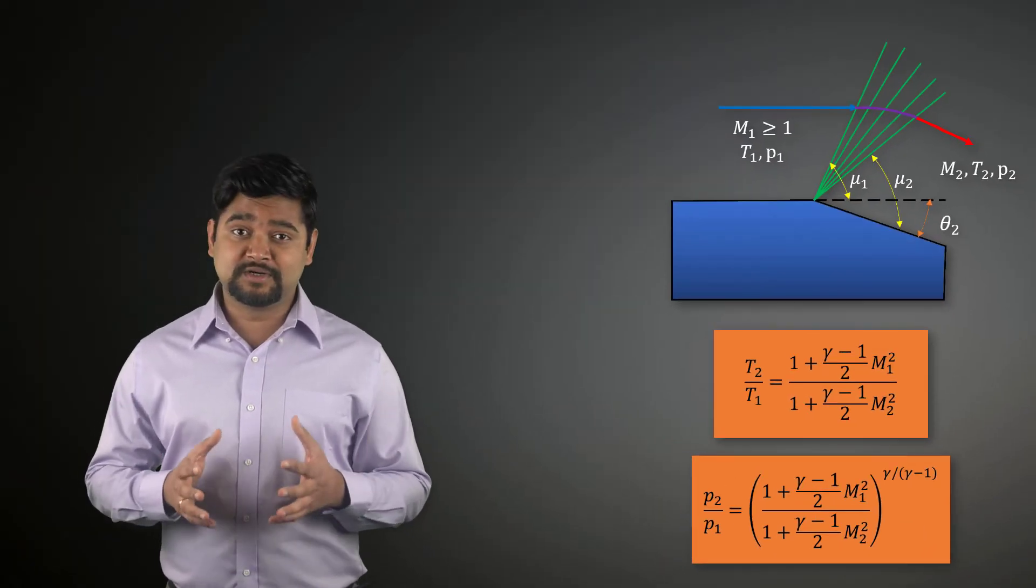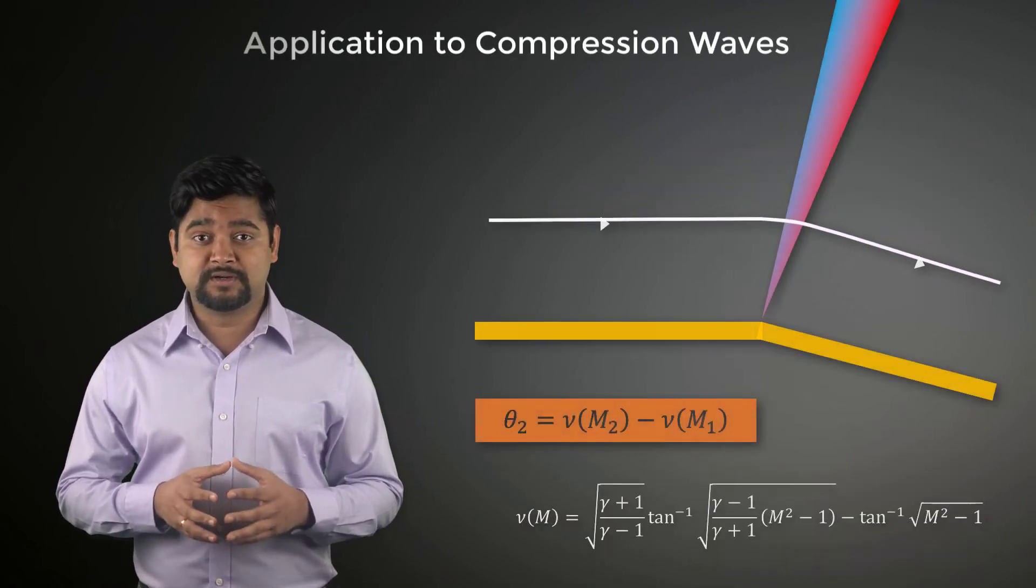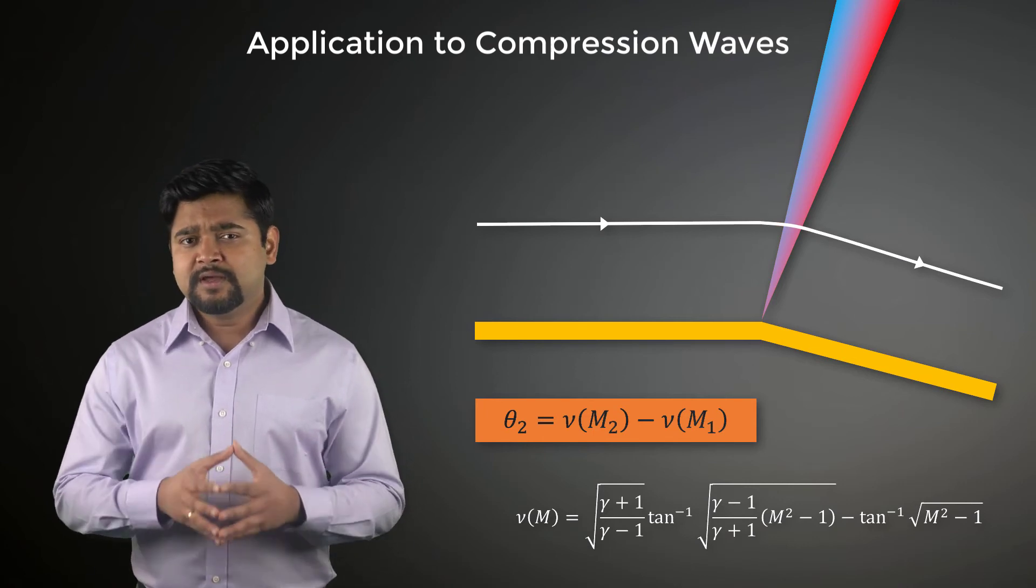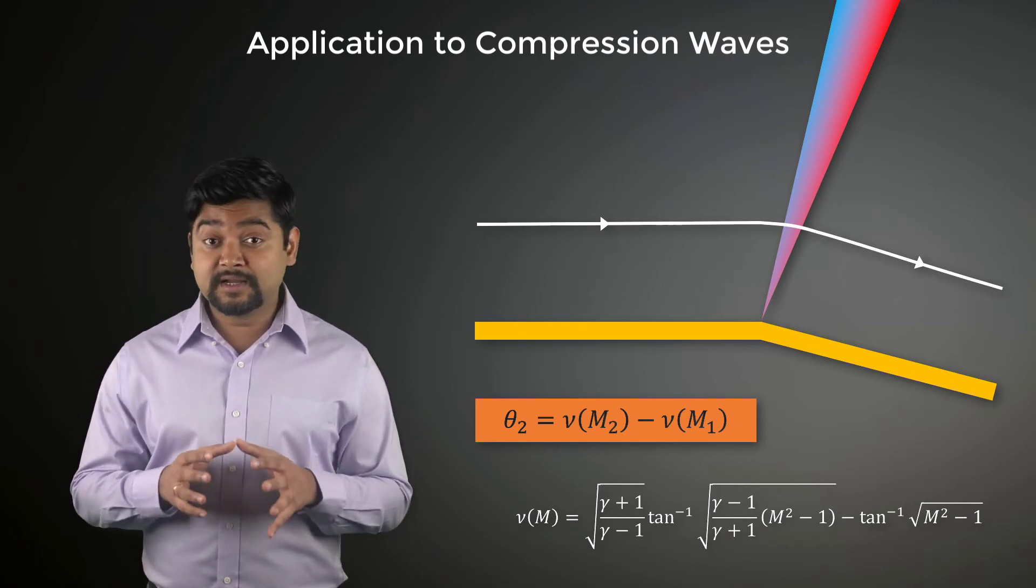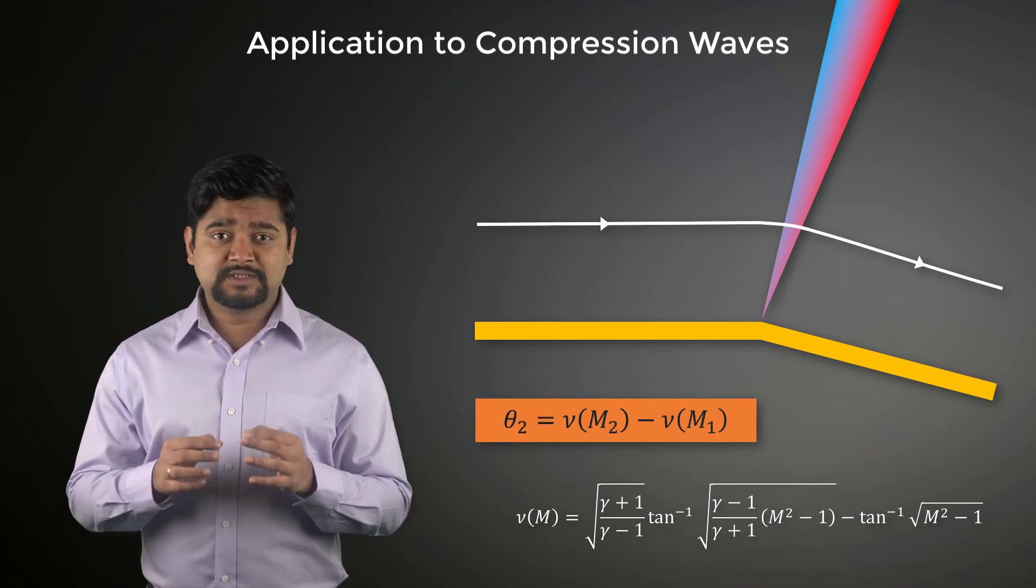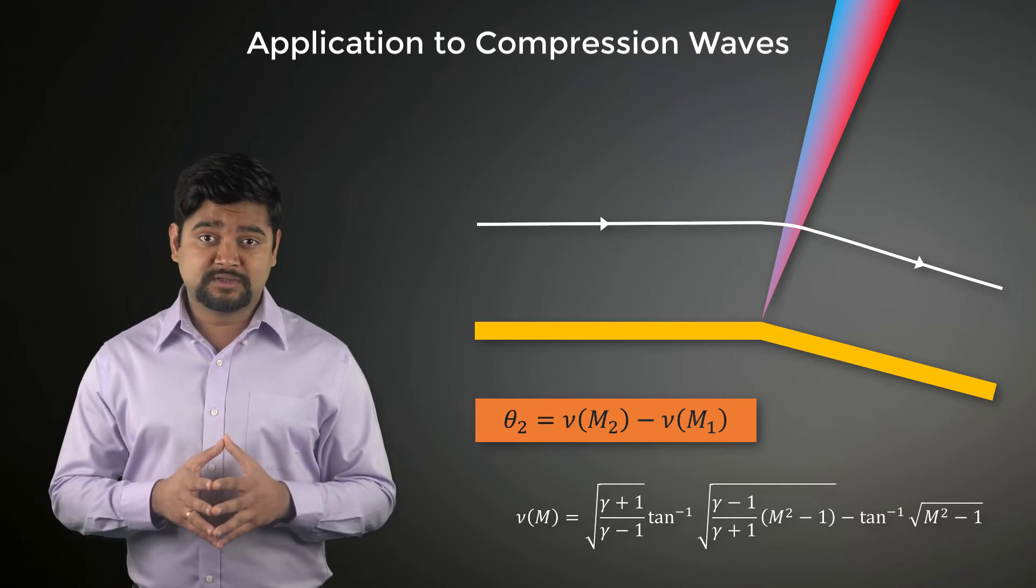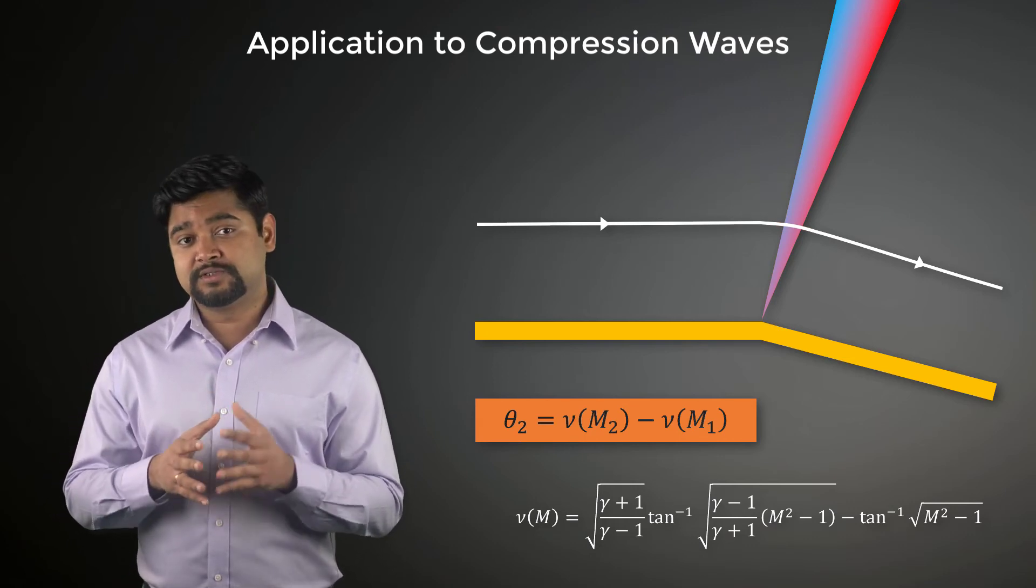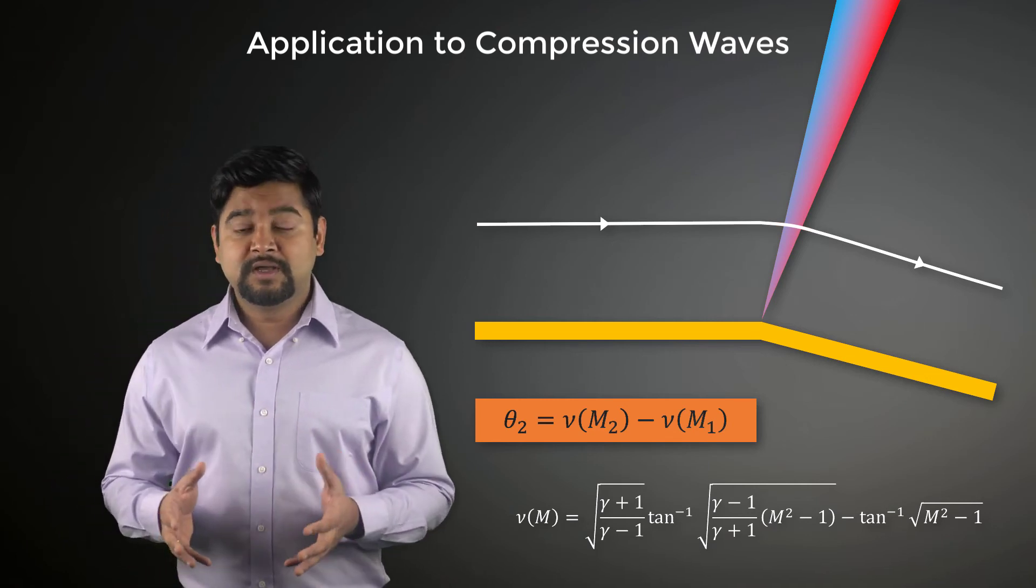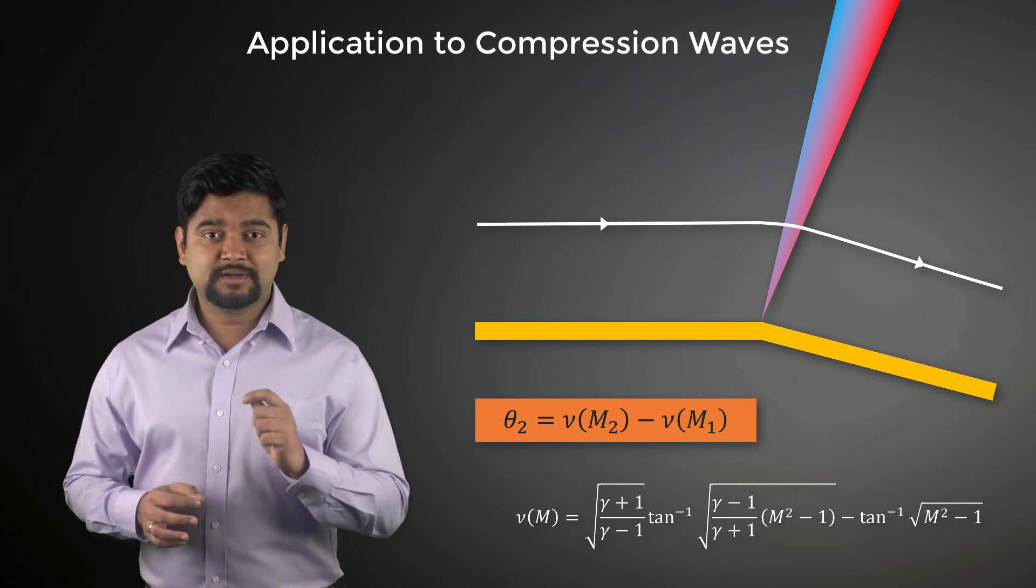As we had discussed earlier, the Prandtl-Meyer function was derived using a definition of a Mach wave and geometric considerations. We never actually enforced any condition that explicitly stated that the flow has to be expanding. And therefore, the Prandtl-Meyer function holds in all situations where the flow is turning isentropically through an envelope of Mach waves, irrespective of whether the flow is expanding or compressing.